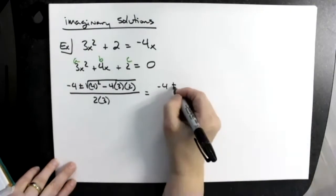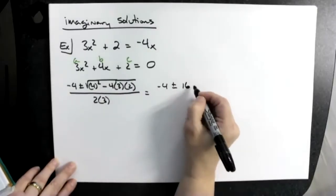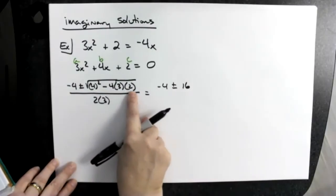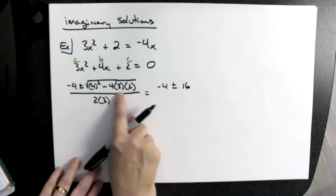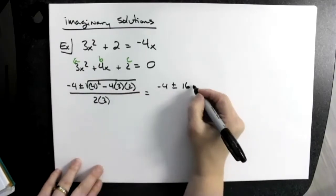Negative 4 out in front stays put. That's going to be a 16. Now this is going to be minus whatever this value is right here: 4 times 3 is 12, times 2 is 24, and then all over 6.